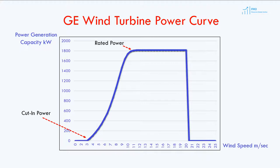Remember how in the previous lesson we talked about rated or nameplate capacity, which represents the maximum potential energy that wind turbines can generate. The rated power on the power curve represents this maximum potential energy. Finally, at wind speeds above 20 meters per second, the rotor stops in order to prevent damage — this point is known as cut-out power. Cut-in, cut-out, and rated power depend on the turbine and turbine manufacturer.